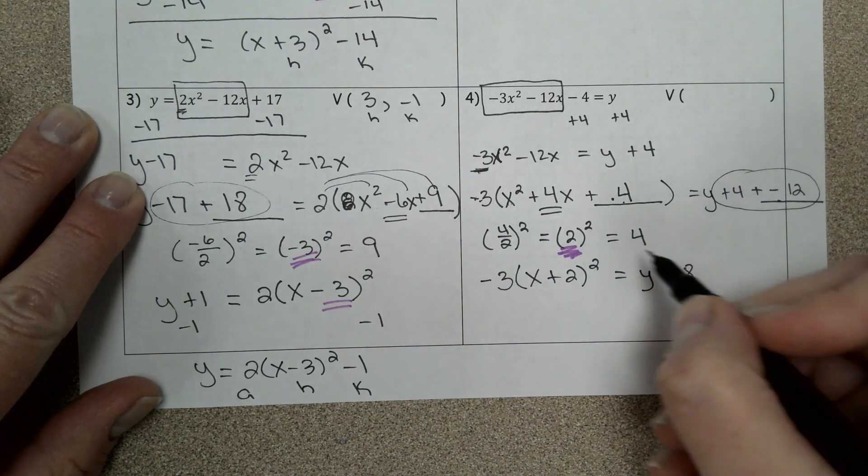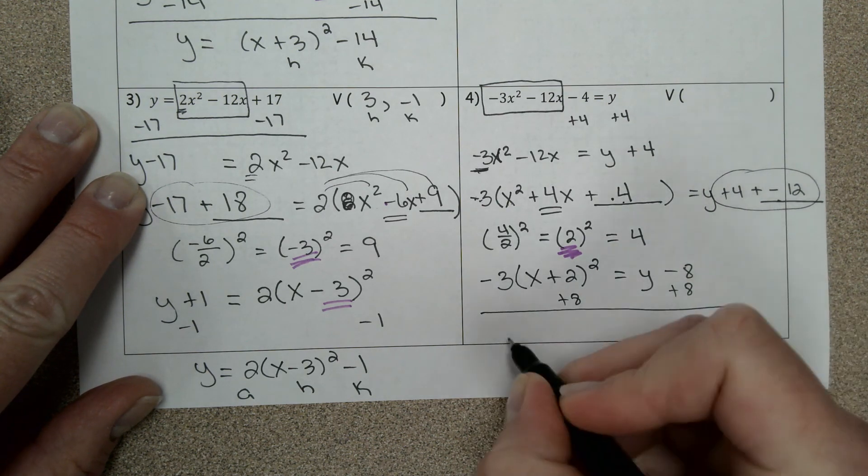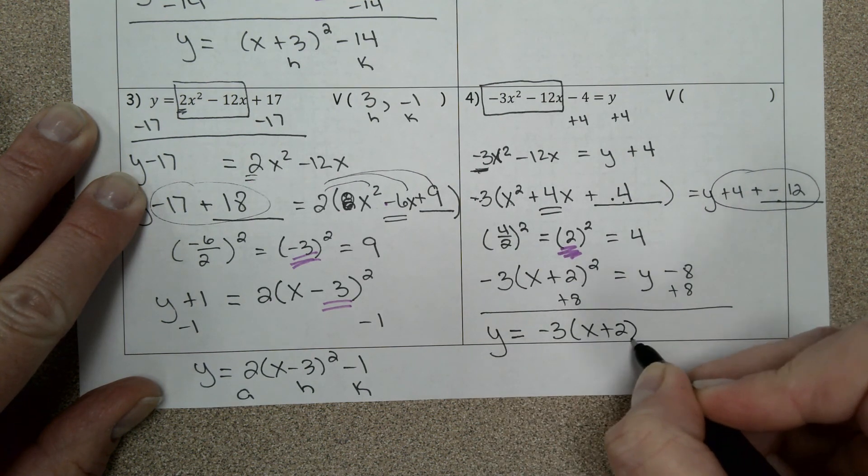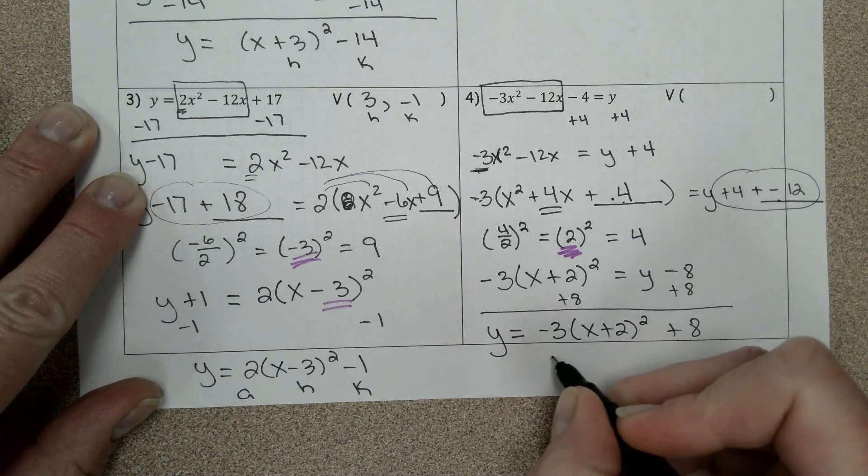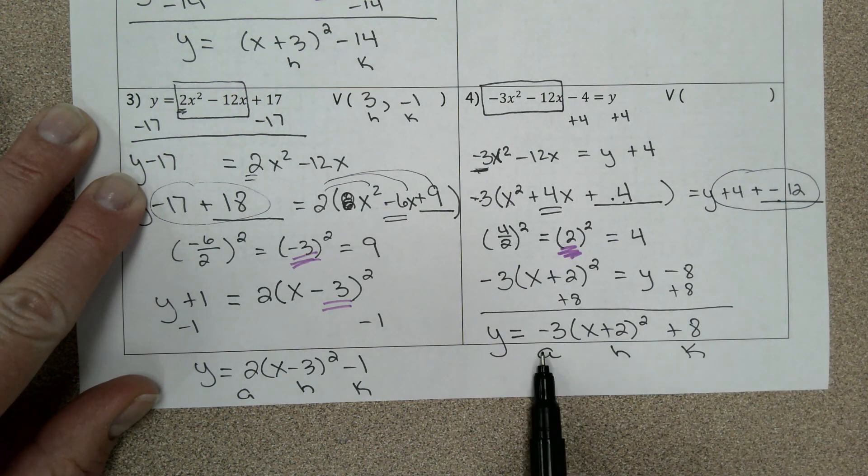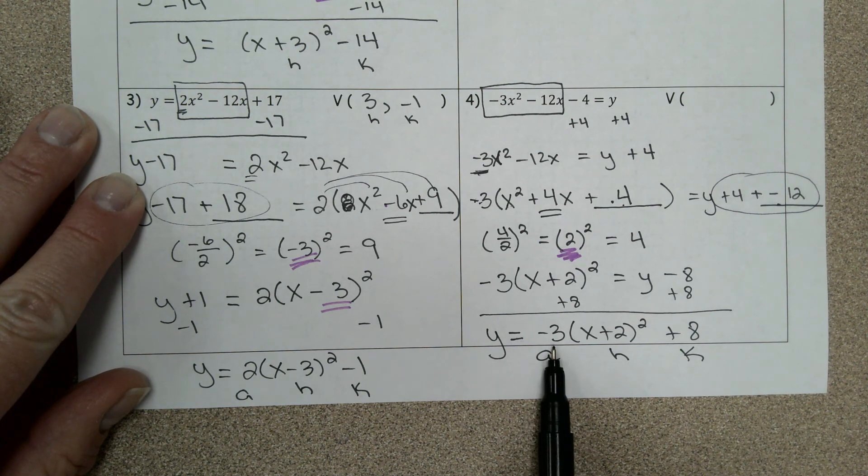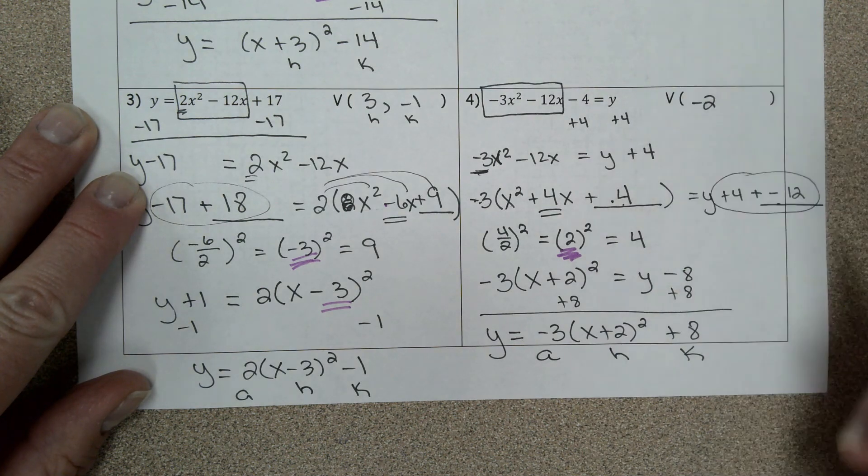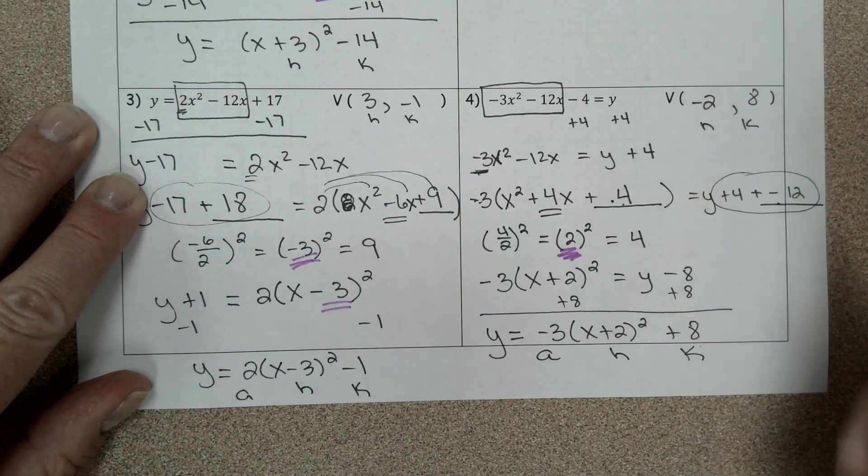Step 5 says move the constant to the other side. So y equals negative 3 times x plus 2 squared plus 8. There's my a, there's my h, and there's my k. I can see that this reflected and stretched by a factor of three. It went left two, so my vertex is located at h, k, and it went up eight.